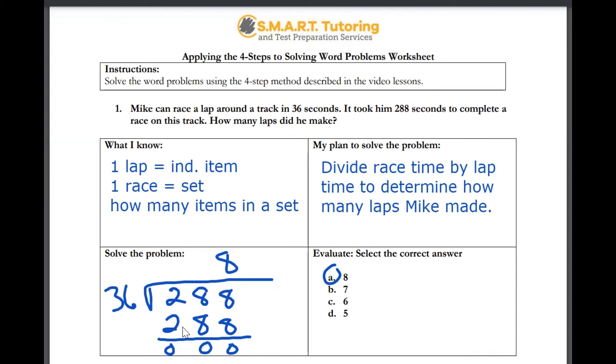When you move to the second step, which is plan to solve the problem, you want to consider what you need to do to solve the problem. In this case, you're going to divide the race time by the lap time to determine how many laps Mike made.